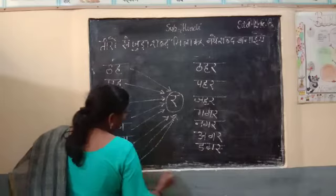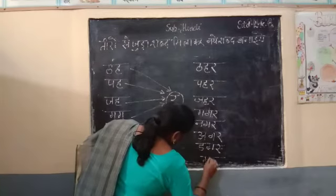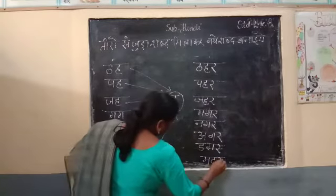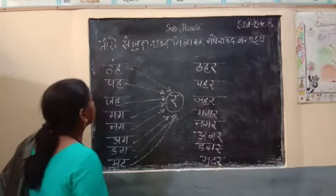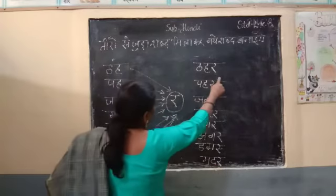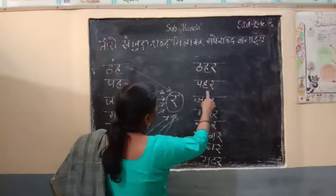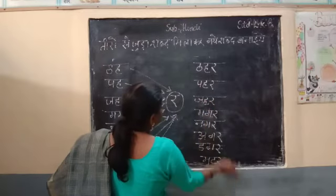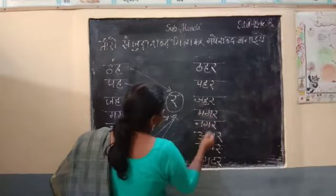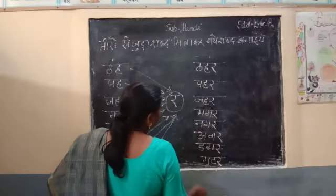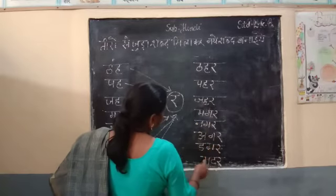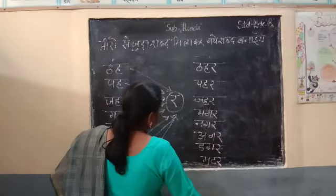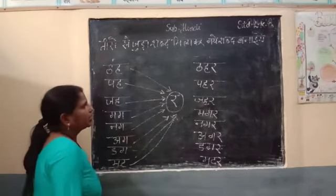Now we will see that the Maa Da. We will see that the Maa Da. Tha Gaara Thahar, Paa Gaara Pahar, Ja Gaara Chahar, Maa Gaara Magar, Na Gaara Nagar, Agar, Da Gaara Dagar, Maa Gaara Matar. Now we will see that the Maa Da.